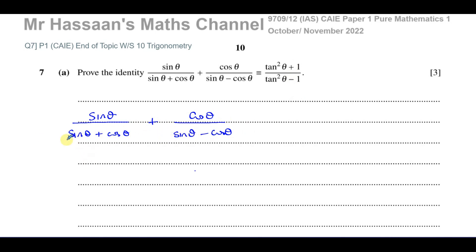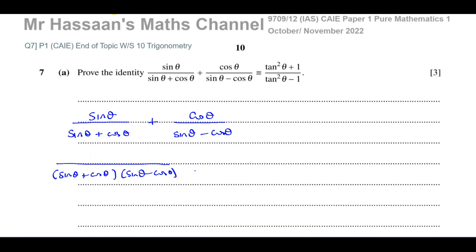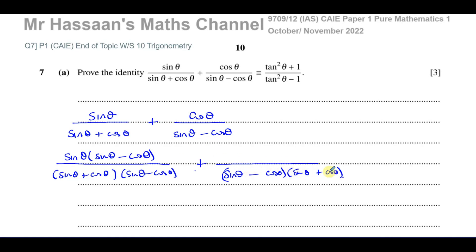The common denominator of these two fractions is (sine θ + cosine θ)(sine θ − cosine θ). I'm going to do the proper method first and then show you a shortcut. We make the common denominator of (sine θ + cosine θ) and (sine θ − cosine θ). For the first fraction, I multiply the denominator by (sine θ − cosine θ), so I also multiply the numerator by (sine θ − cosine θ). For the second fraction, I multiply by (sine θ + cosine θ), giving cosine θ times (sine θ + cosine θ).